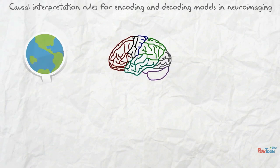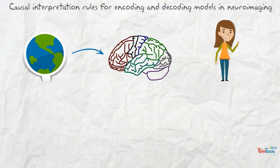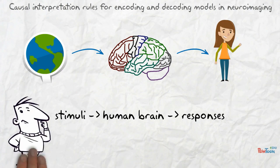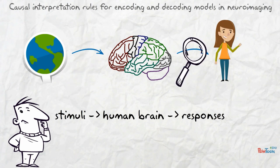The human brain is constantly exposed to the world's stimuli and processes them. The human brain also constantly generates responses, for example, movements. This leads to the following causal chain: stimuli to brain to responses. Researchers try to gain detailed insights into how certain stimuli are processed and how certain responses are generated by the human brain.